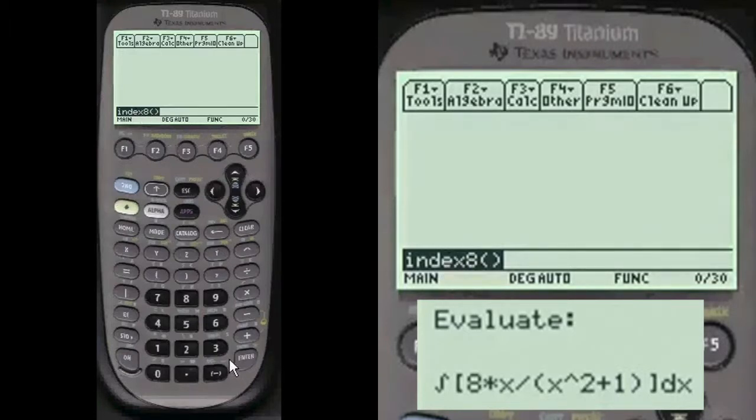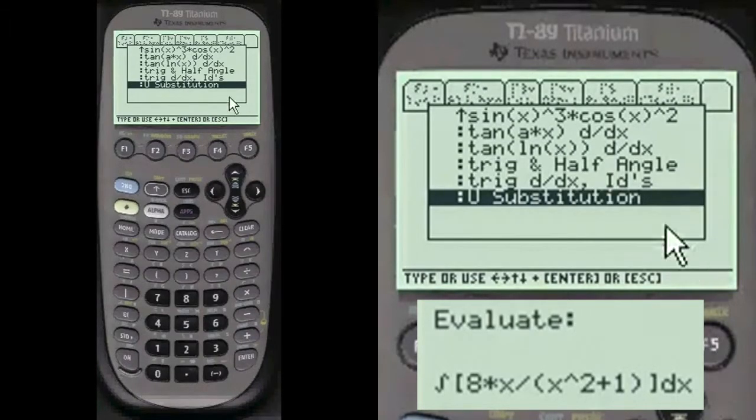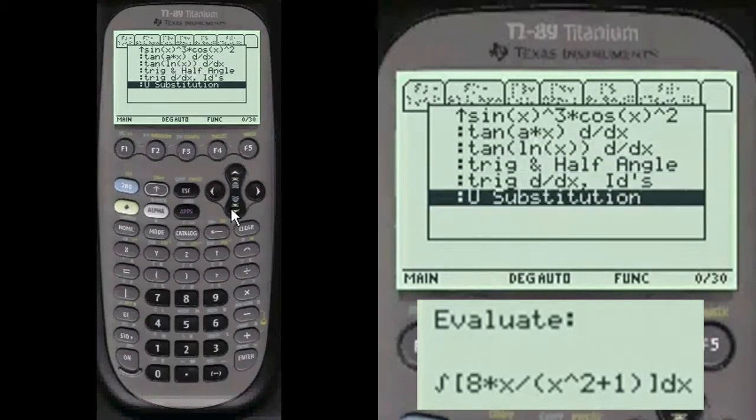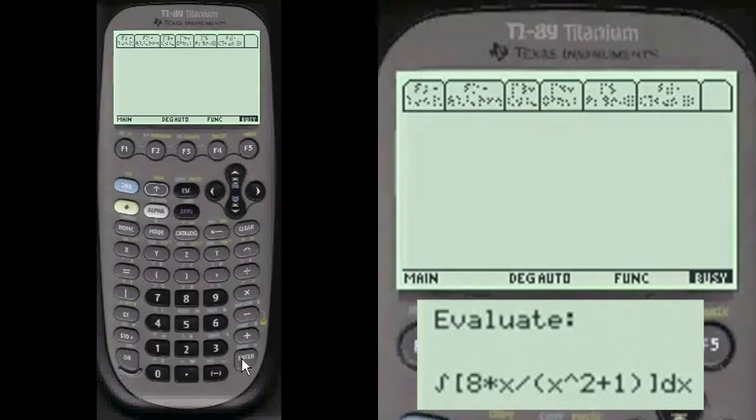Index 8 is my menu. You have to put that in the end line here to get to my menu. I'm already at u-substitution but you scroll down with the cursor to get there. And wait for it to load here for a second.